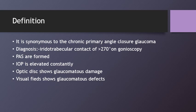Primary angle closure glaucoma simply presents with optic disc changes and visual field defects with raised IOP. The pathogenesis of the disease can be divided into three types: pupillary block mechanism, phacomorphic mechanism, and plateau iris configuration.